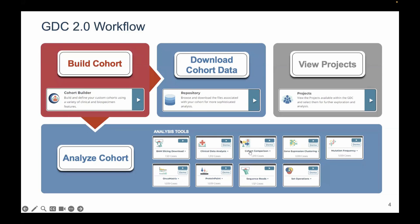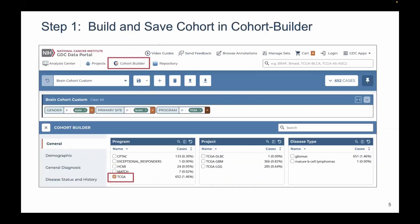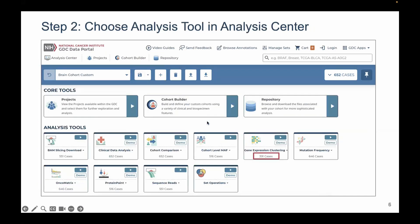This can be broken down into a very easy three-step process. The first step is to build and save a cohort in the cohort builder. Cohorts are created by applying different filters based on case properties — for instance, using the gender property male, the primary site brain, and the program TCGA. This is where you click around and apply the different filters.